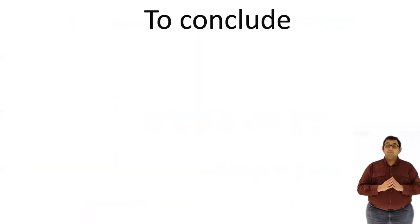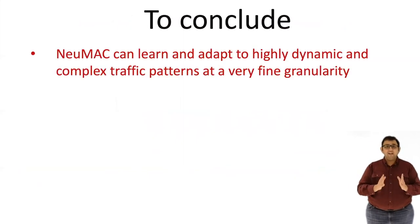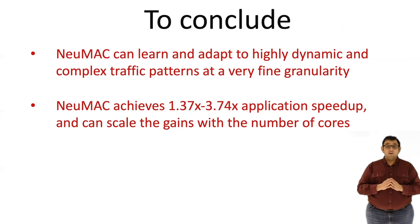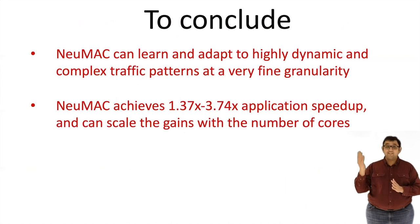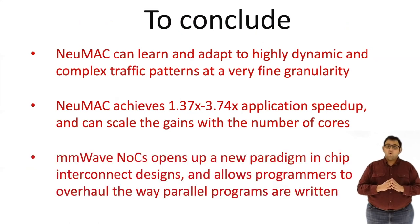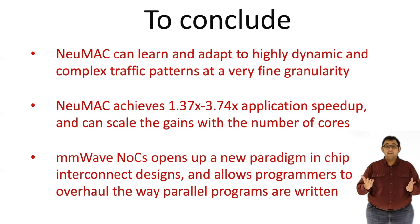To conclude, we present newMAC with the following key points. First, newMAC can learn and adapt to highly dynamic traffic with complex dependencies between threads, allowing it to achieve up to 3.74 times speedup for classical architecture benchmarks, and we have shown that these gains scale as the number of cores increases. Lastly, millimeter wave NOCs open up a whole new paradigm in parallel programming. Due to the high communication cost in wired NOCs, programmers try to avoid data sharing between threads. But with millimeter wave wireless NOCs, applications can now be rewritten to fully embrace the data sharing capabilities of the wireless channel, thus yielding much better performance. Thank you.